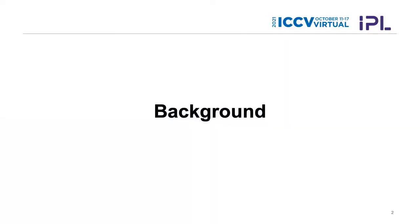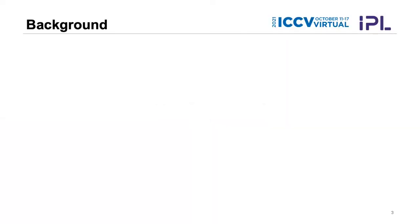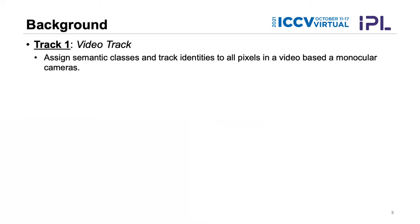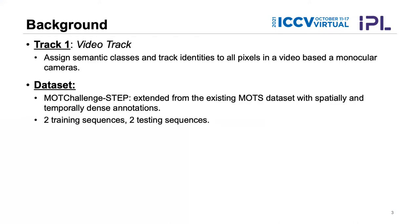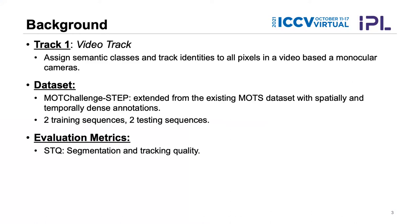Briefly about the background of this challenge: Track 1 in BMTT is the video track. It aims to assign semantic classes and track identities to all pixels in a video based on a monocular camera. The dataset we consider is the MOT challenge STEP dataset, extended from the existing MOTS dataset with spatially and temporally dense annotations. The evaluation metric is STQ, which jointly considers segmentation and tracking performance.